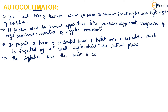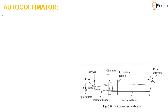This diagram gives the principle of working of an auto collimator. The reticle is an illuminated target with a cross hair pattern, which is positioned in the focal plane of an objective lens. It will have two cross lines. This reticle is positioned such that it is in the focal plane of this objective lens, which is shown in the figure.